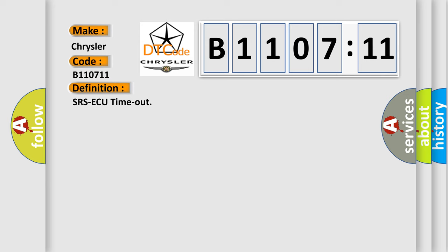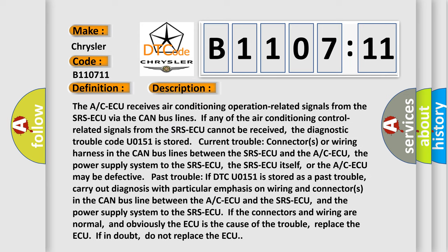And now this is a short description of this DTC code. The A/C ECU receives air conditioning operation-related signals from the SRS ECU via the CAN bus lines. If any of the air conditioning control-related signals from the SRS ECU cannot be received, the diagnostic trouble code U0151 is stored. Current trouble: connectors or wiring harness in the CAN bus lines between the SRS ECU and the A/C ECU.